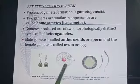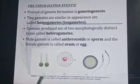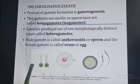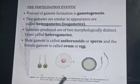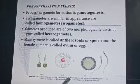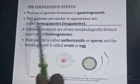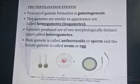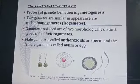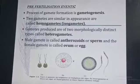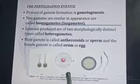Heterogametes are found in Fucus algae. This is the sperm of human beings, whose scientific name is Homo sapiens.